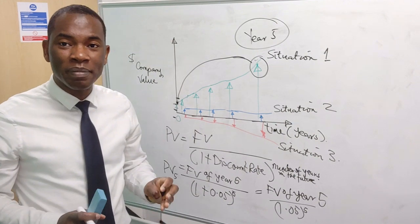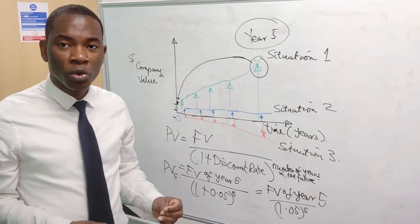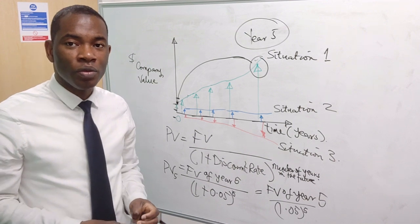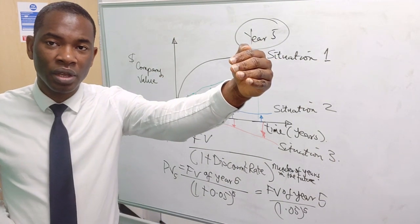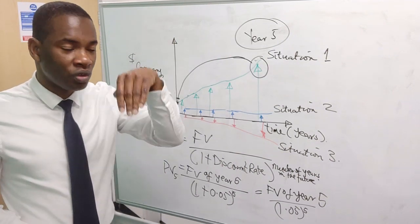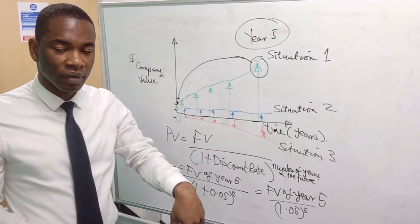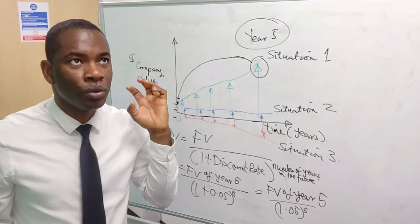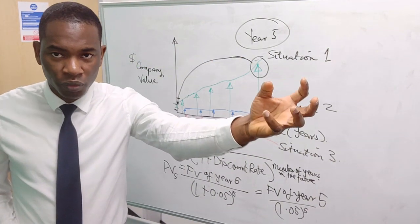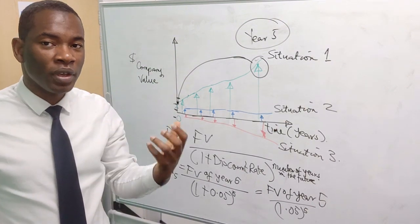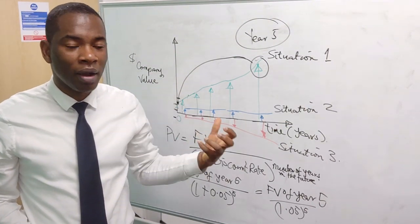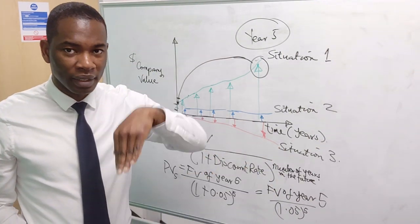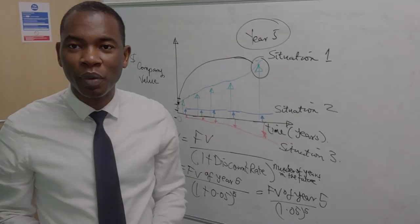That forms the basis of most valuation. You discount what you are expecting tomorrow back to today. To be able to look into tomorrow, you need to understand the earning power of the business and then bring it back to today.